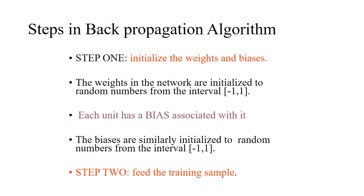What are the steps in the backpropagation algorithm? The first step is to initialize the weights and biases. The weights are initialized randomly — we start with random weights and the weights will be updated in each iteration such that the error is reduced.